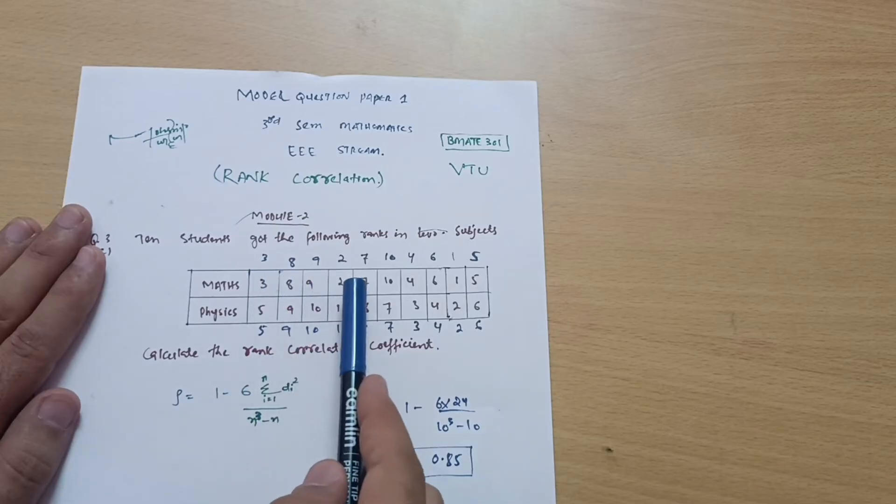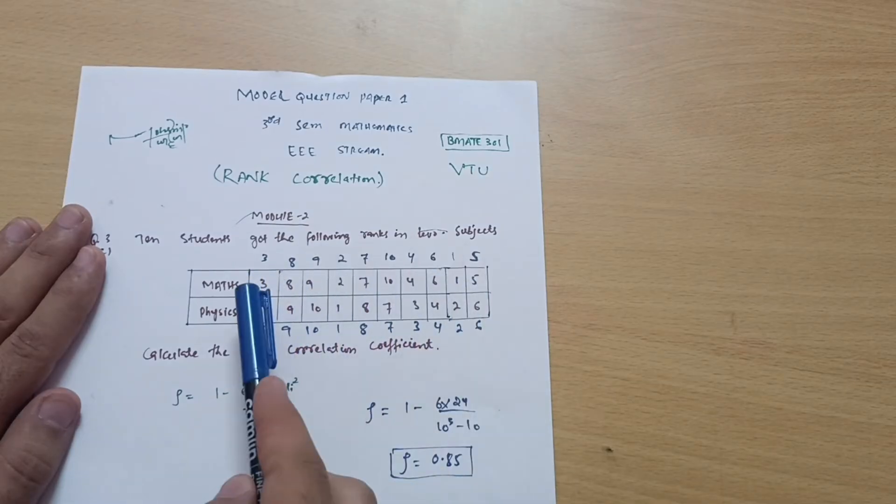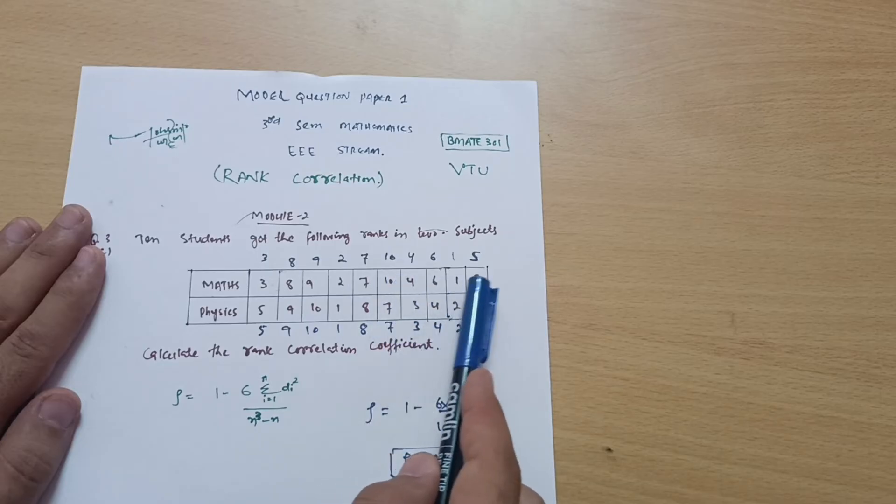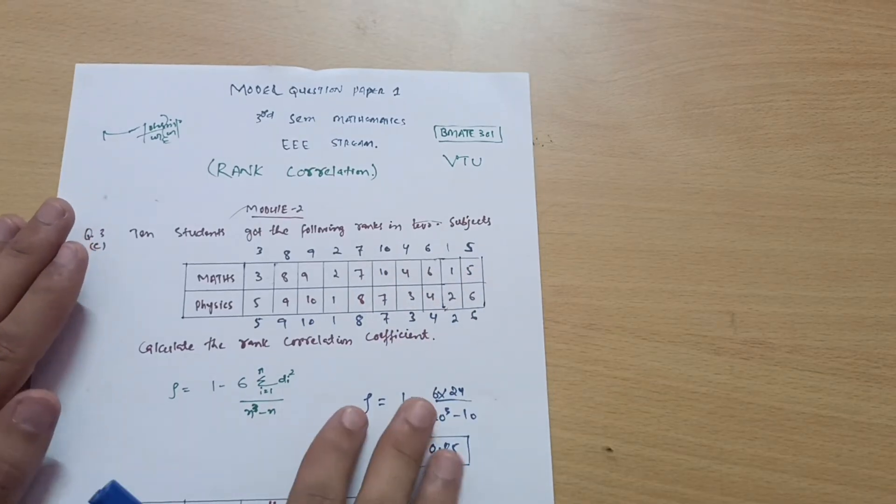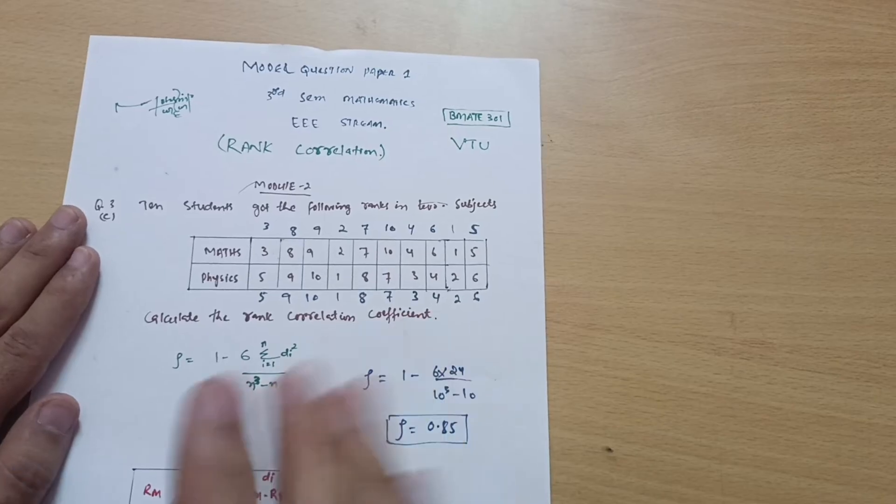Counting the values: 1, 2, 3, 4, 5, 6, 7, 8, 9, 10. This is the n value. Now how to calculate and assign ranks, let me tell you.